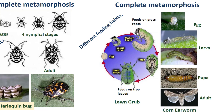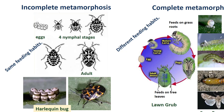Other insects, such as grasshoppers, aphids, and true bugs, go through gradual or incomplete metamorphosis and do not have a pupal stage. Their immatures are called nymphs. They differ from adults primarily in their size and absence of wings. Adults and immatures of these insects have the same food habits.